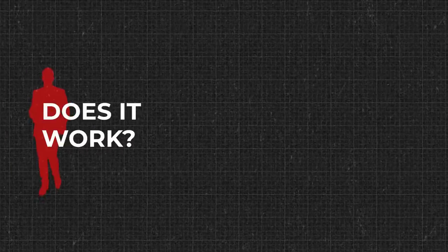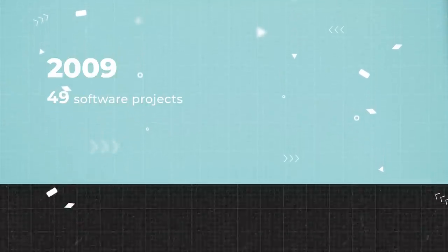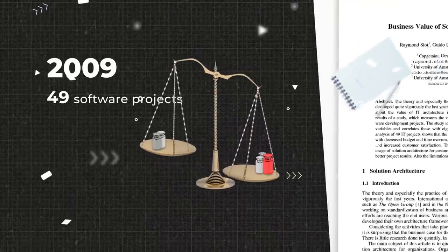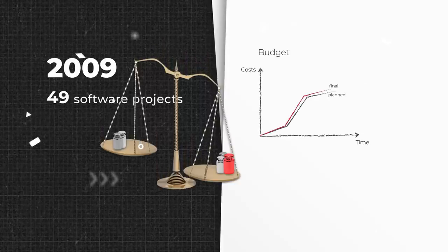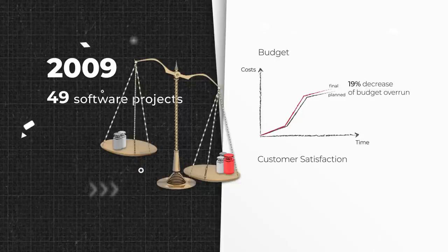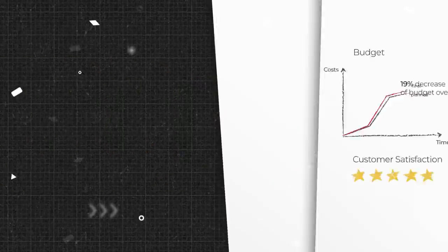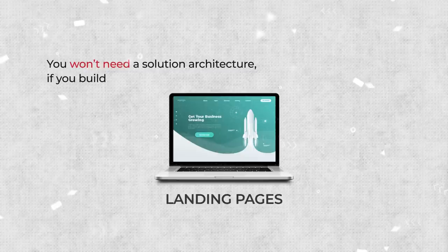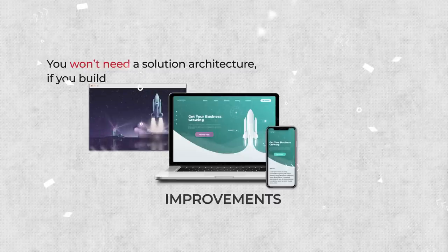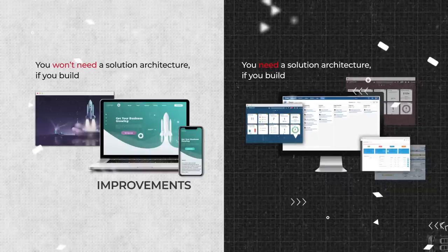But does it work? In 2009, experts from Capgemini and the University of Amsterdam surveyed people from 49 software projects to understand the business value of solution architecture as a practice. They found that the use of solution architecture helps decrease budget overrun by about 19%, improves customer satisfaction, and finds a better technical fit for project results. This doesn't mean, however, that all software projects need solution architects. If you build landing pages, integrate small modules, or make minor iterative improvements, most likely you won't need dedicated solution architecture. As one of the building blocks of enterprise planning, solution architecture remains in the realm of complex projects.